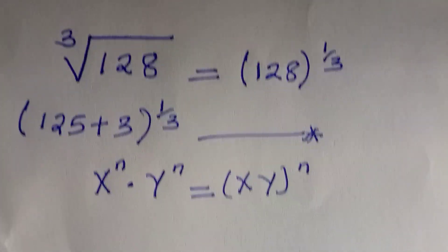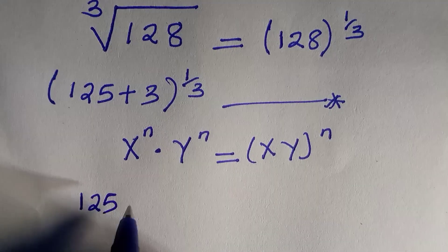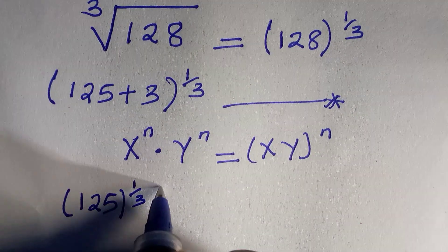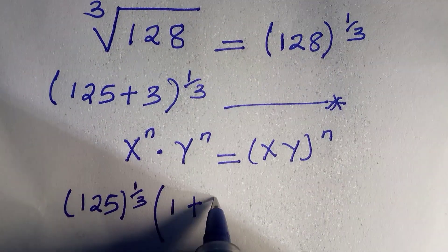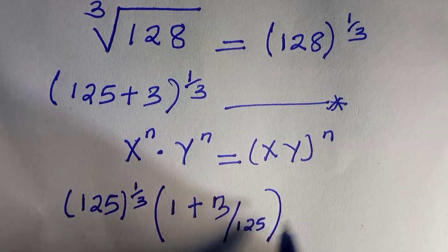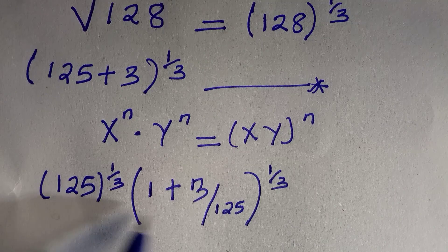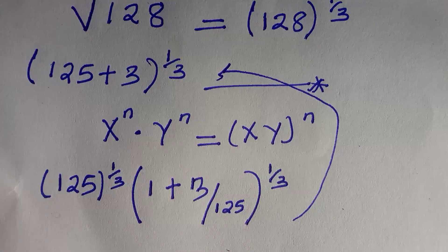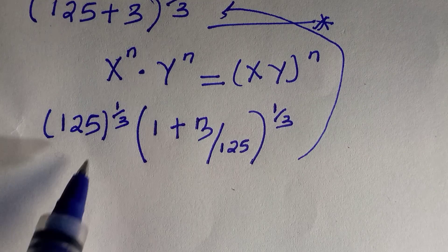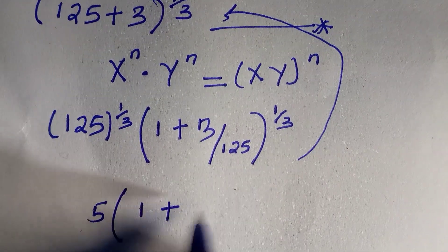Applying this rule to the above, we take 125 to the power of one over three out and create another bracket: 1 plus 3 divided by 125, all raised to the power of one over three. Note that 125 to the power of one over three is just 5, the cube root of 125.